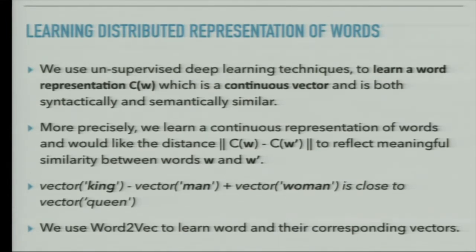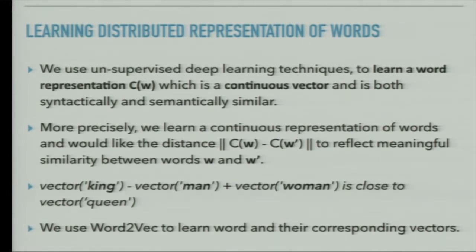In production, we use an unsupervised learning technique to learn word representations. We want the distance between two continuous word representations — cw minus cw-dash — to reflect meaningful similarity. For example, if you take the vector for 'king', subtract the vector for 'man', and add the vector for 'woman', you get a vector close to 'queen'. The algorithm that defines this is word2vec, and we learn these representations and their corresponding vectors.